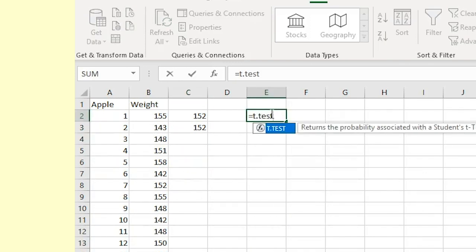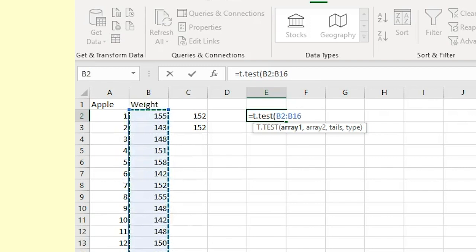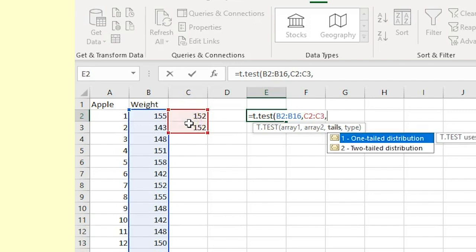In a cell away from the data, enter equals t dot test open brackets. Highlight the data, comma. Highlight your comparison numbers, comma. Enter 1 for a one-tailed test.